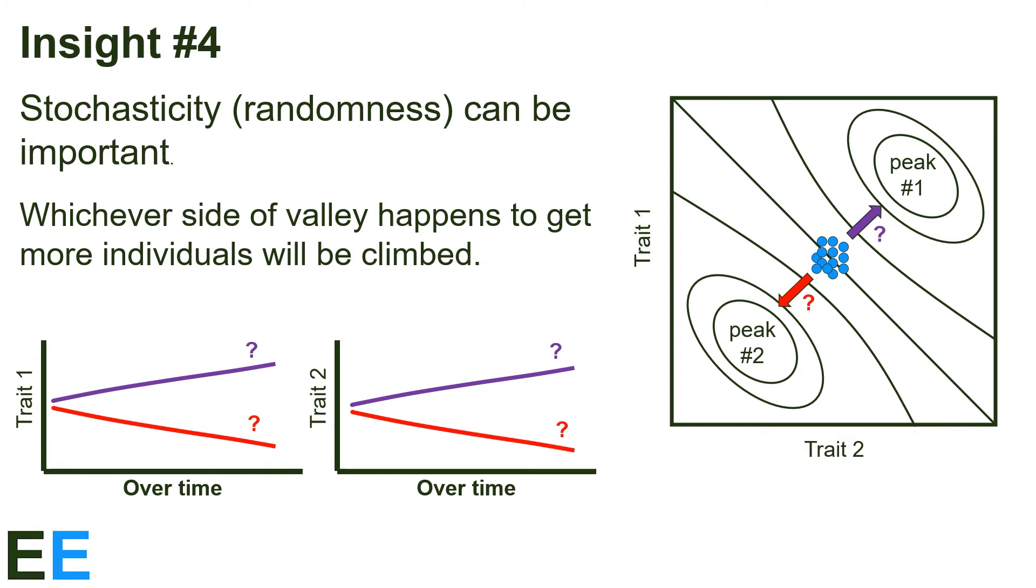Will this population evolve to have small versions of both traits or larger versions? It's up to chance. The entire process is not completely chance, of course. Non-random selection will take the population to the final peak, but the little bit of chance at the beginning can have a big effect on how this population evolves.